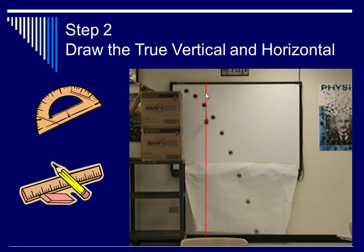You also need to know true horizontal, which is perpendicular to true vertical. And again, you can have that up here or down here. As long as it's perpendicular to this line or whatever your vertical is, then you're okay.